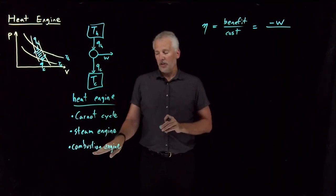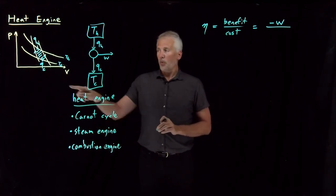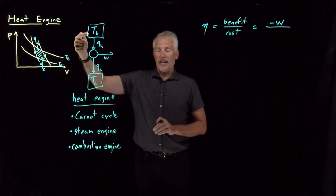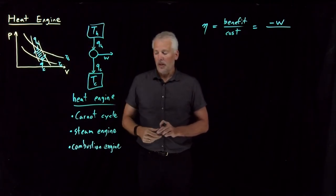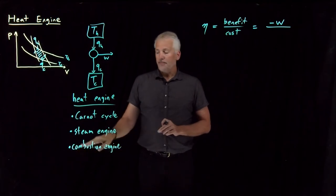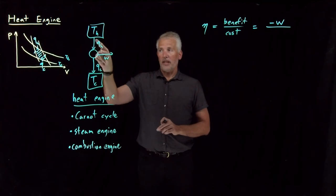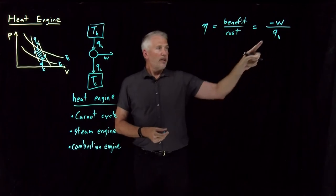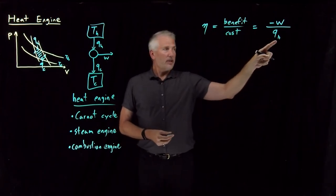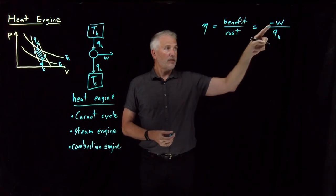The cost it takes to generate that much work, to have the system generate that much work, is Q sub H. Again, whether it's a car engine or locomotive, steam engine, or some other process, we need to heat something up to the hot temperature, and that's the source of the heat that's provided to the system in this step. So that's either the gasoline or the coal. Somehow the cost of generating this heat is our cost.